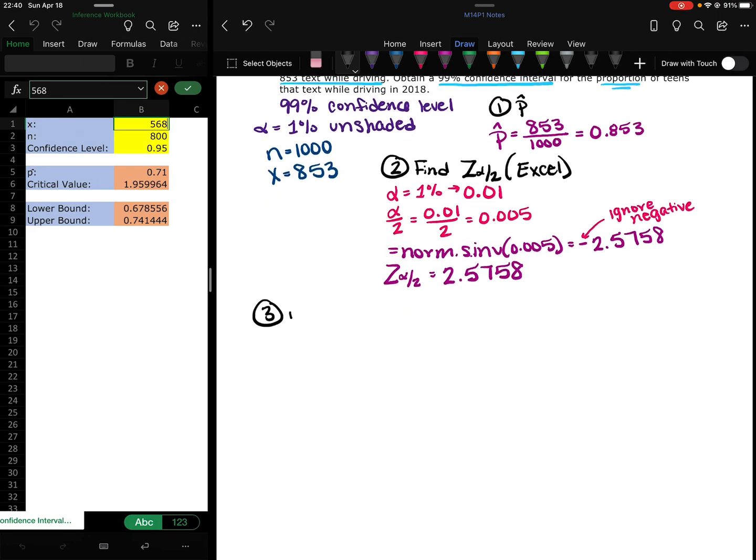So now we can go ahead and plug it into the formula. I'm just going to write the formula. So our p-hat is 0.853 plus and minus 2.5758 times the square root of 0.853 times 1 minus 0.853 over 1,000.